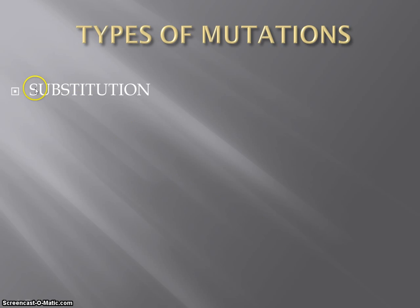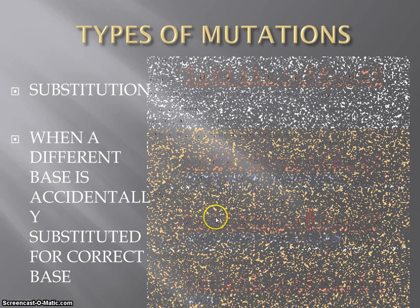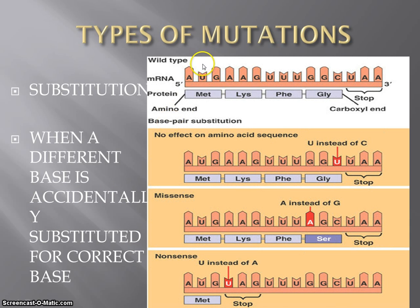Think about it this way: if yours truly, Mr. Bentley, is out sick, they bring in a substitute teacher — someone to fill my place, but they are not me. Similarly, in a substitution mutation, we're going to substitute one base for another — an incorrect base accidentally substituted for the correct base. In this example, here is an mRNA molecule that codes for a short protein: methionine, lysine, phenylalanine, glycine, and a stop codon. It's a very short protein — only four amino acids long.